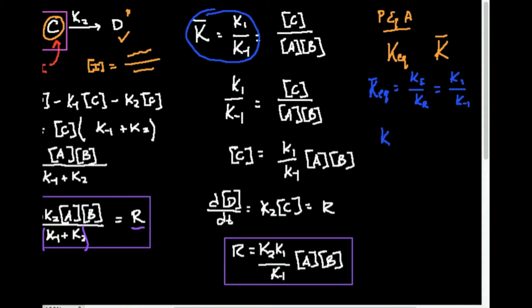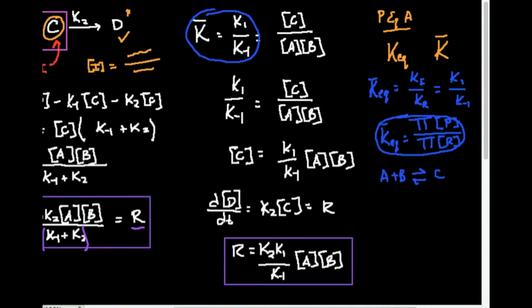Another expression for the equilibrium constant — thinking back to thermodynamics — is the product of the concentrations of the products divided by the product of the concentrations of the reactants. Since the reaction is A plus B in equilibrium with C, the equilibrium constant equals the concentration of C divided by the concentration of A times the concentration of B. So K equals k1 over k-minus-1, and also equals [C] divided by [A][B]. That's the fundamental expression for the pre-equilibrium approximation.